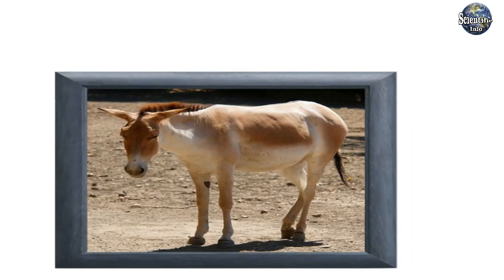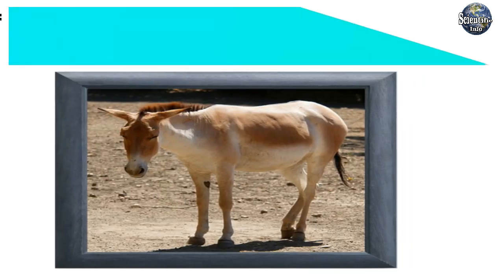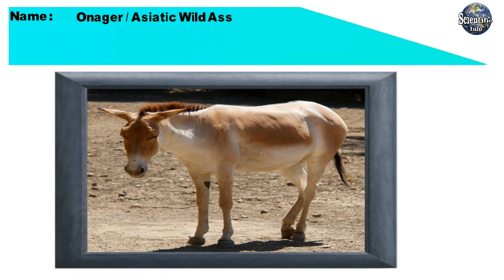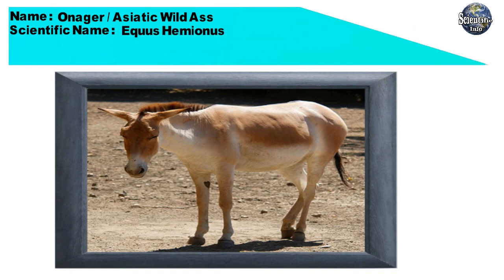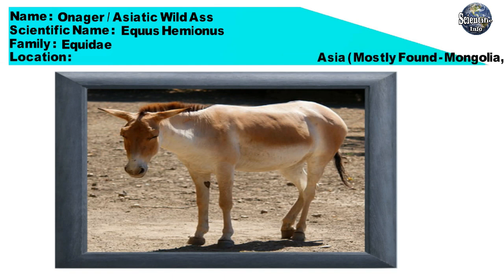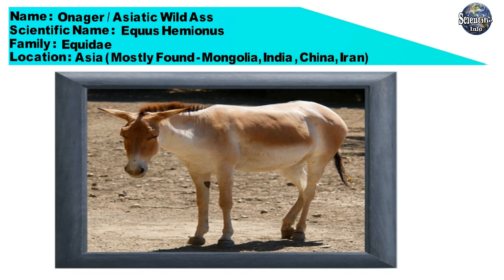Name: Onager or Asiatic Wild Ass. Scientific name: Equus hemionus. Family: Equidae. Location: Asia — Mongolia, India, China, Iran.